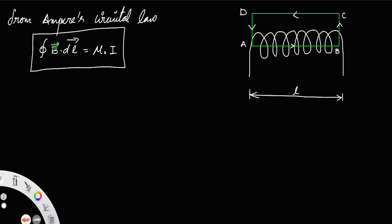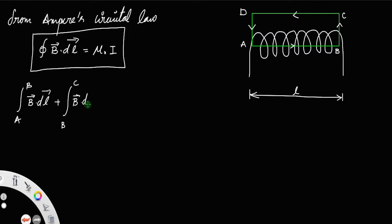Since we have a closed rectangular loop, the integral B dot dL means we integrate along the entire rectangular loop: integral from A to B of B dot dL, plus integral from B to C of B dot dL, plus integral from C to D of B dot dL, and finally integral from D to A of B dot dL.